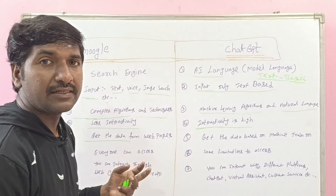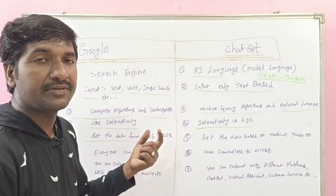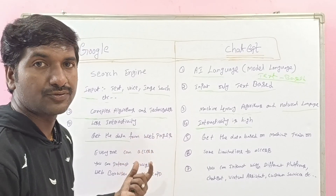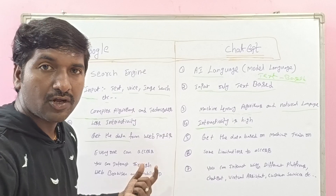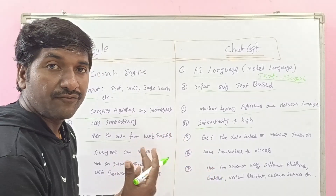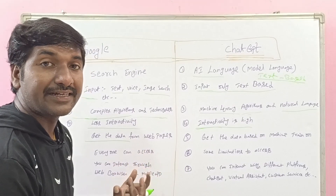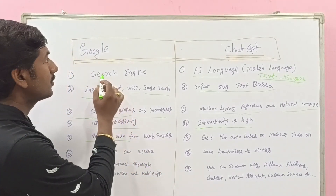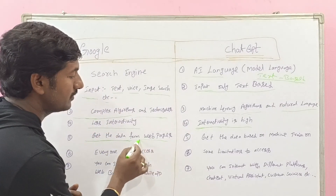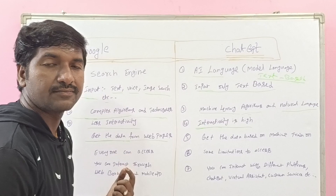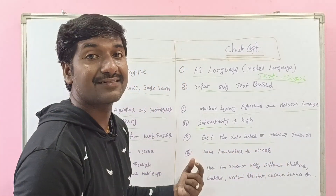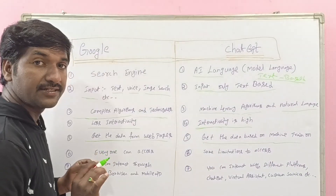You may have a doubt about where Google or ChatGPT gets its data — what is the main data source? When you request something from Google, it gets data from a number of different websites. Whereas ChatGPT gets its data based on what the model was trained on.